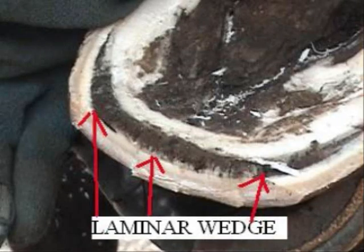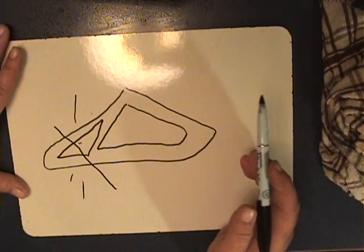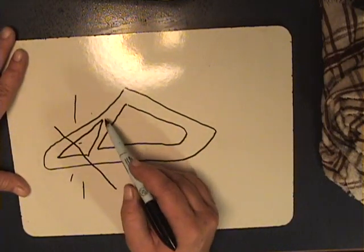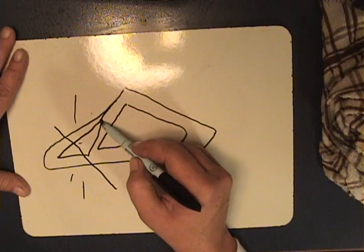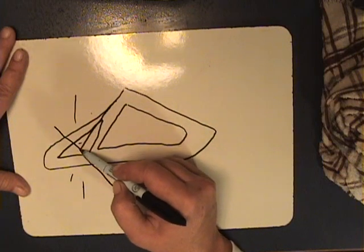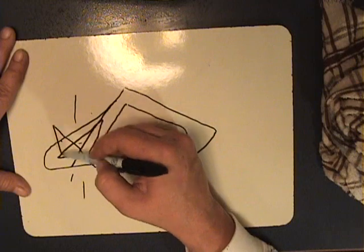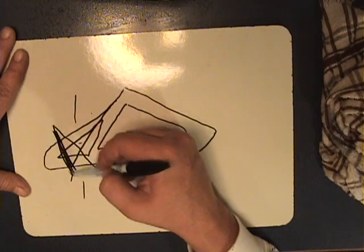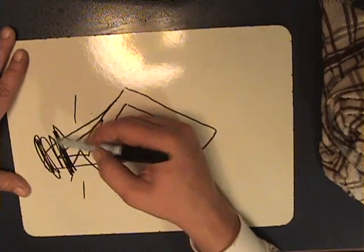The main point is that you have got, in order to get this wall growing back down and get rid of this laminar wedge that's been put in there, you have got to get the leverage off the toe.